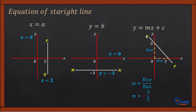The gradient is negative 3 over 2 — it is negative because the line is falling to the right. When a line goes down to the right, its gradient is negative. The y-intercept is 3, so c equals 3. Therefore, the equation of straight line PQ is y equals negative 3 over 2 times x plus 3. Students must know how to find the equation of a straight line for this topic.